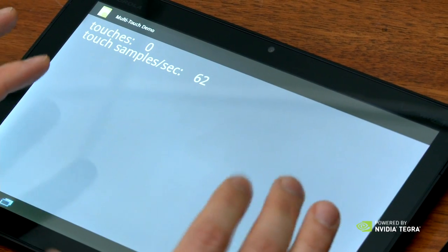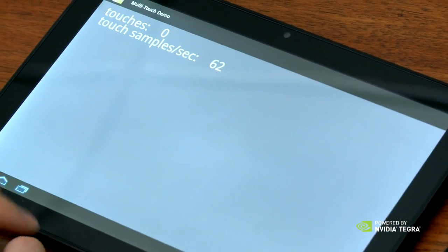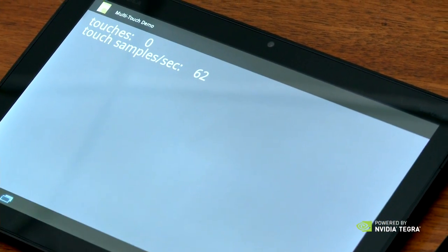So let me show you how this works. First we have a Xoom 1 here running Honeycomb. It's running an app that we use that just measures touch in general.